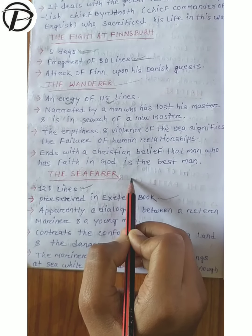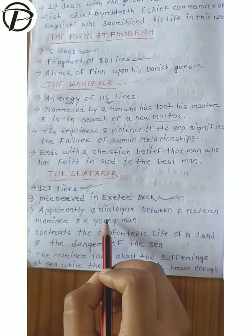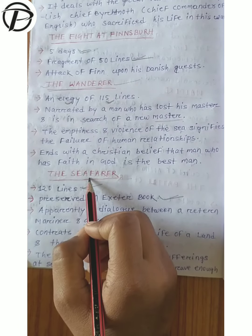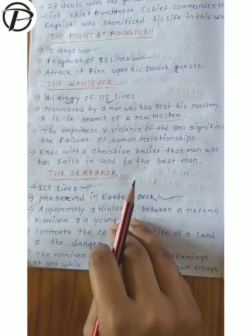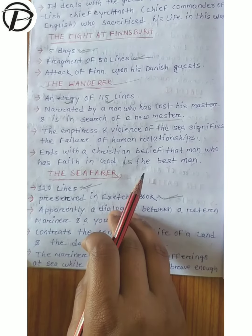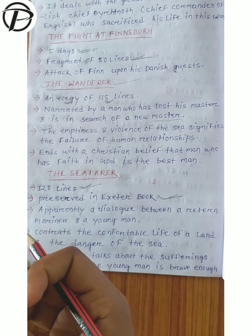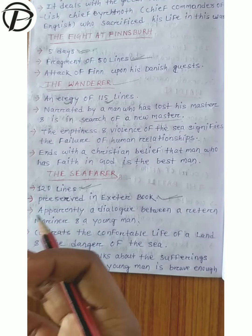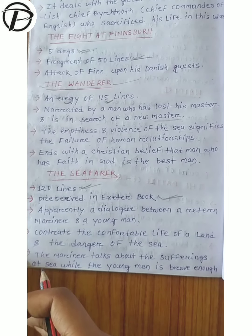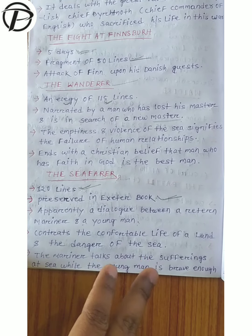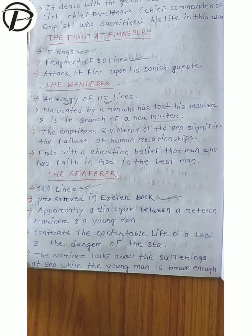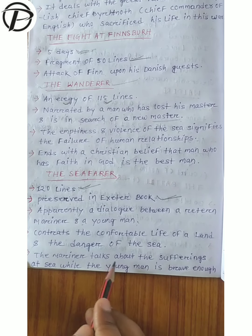Then the important work is The Seafarer. It is of 120 lines, preserved in the Exeter Book, and is apparently a dialogue between a veteran mariner and a young man. The mariner talks about the sufferings at sea, while the young man is brave enough to face any kind of adventures and challenges.